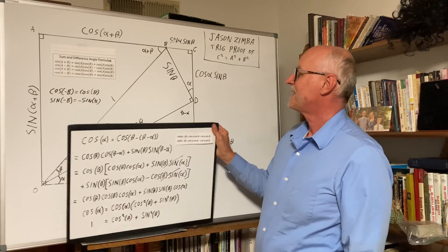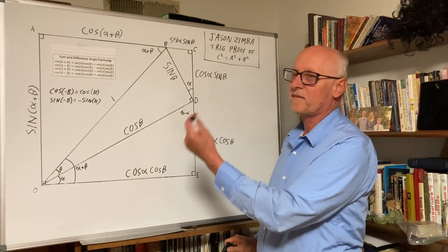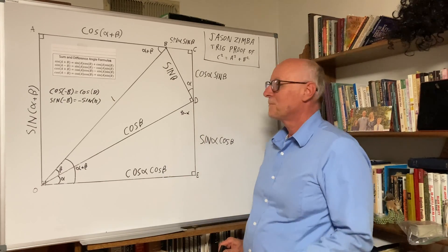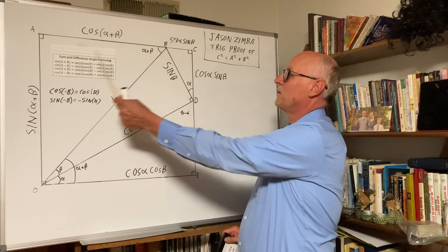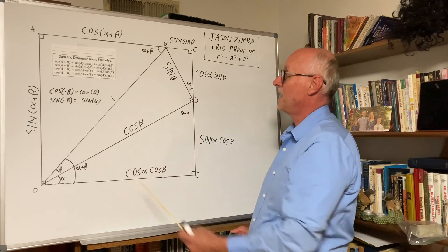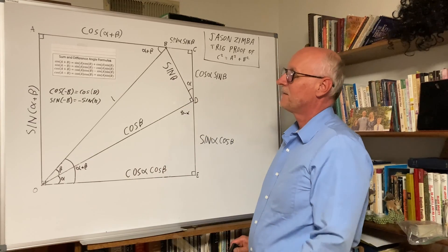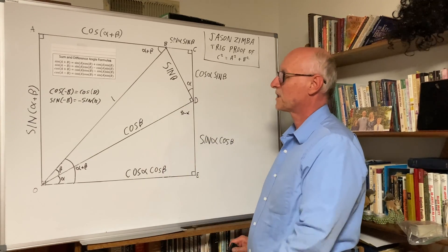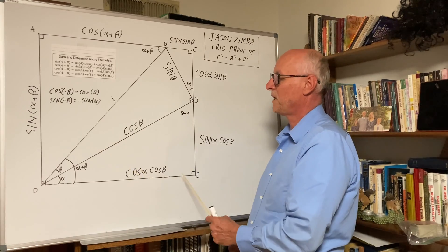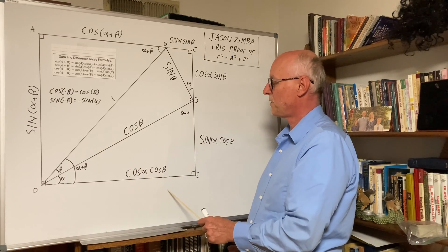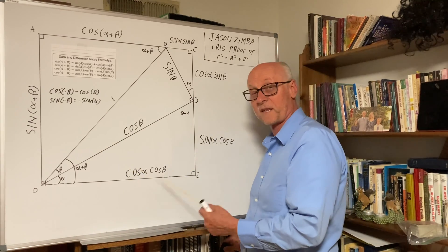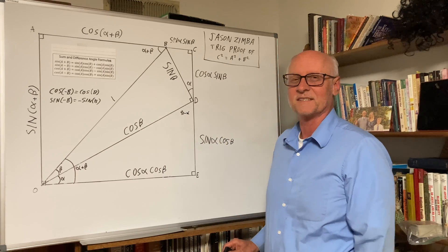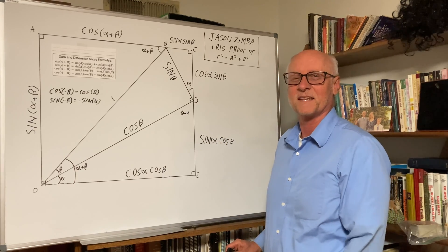Those formulas we got previously in our previous videos, essentially using this kind of diagram. Jason Zimba's proof of the Pythagorean Theorem is very simple, and none of this depends upon a previous knowledge of the Pythagorean Theorem, so we avoid circular reasoning. So that's a good thing.